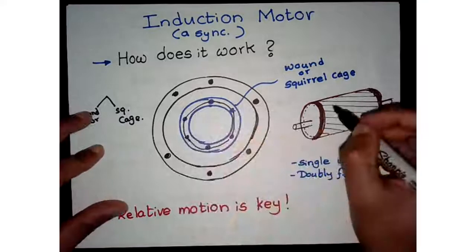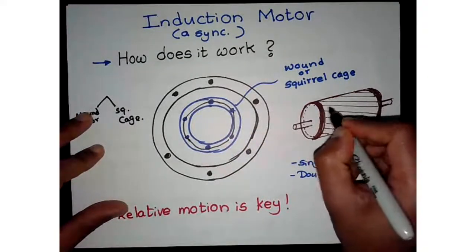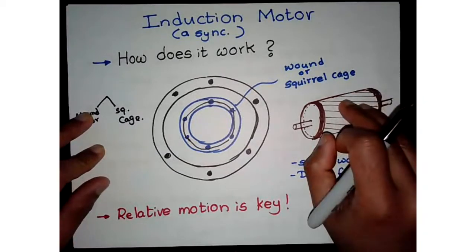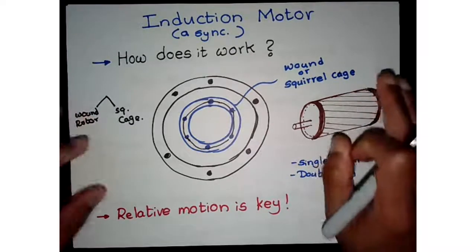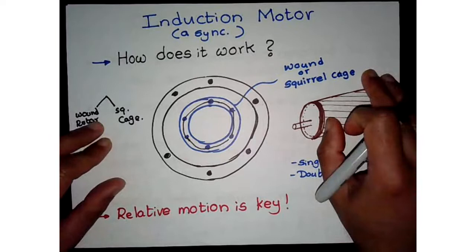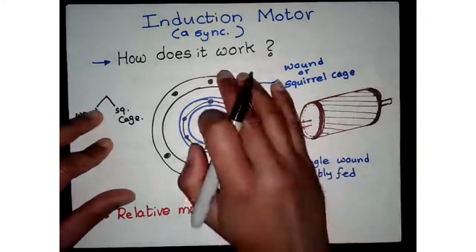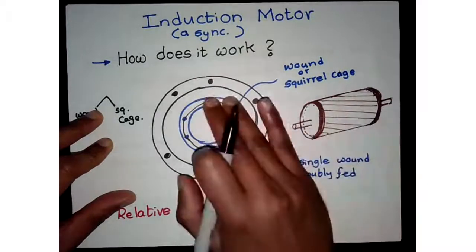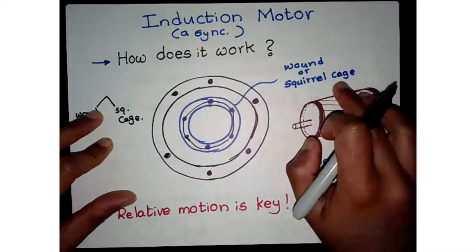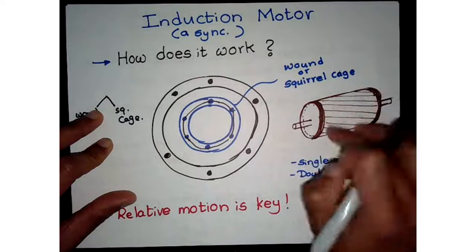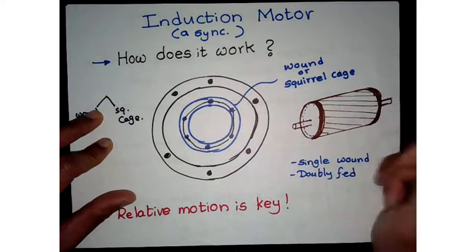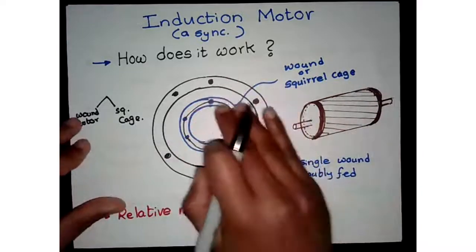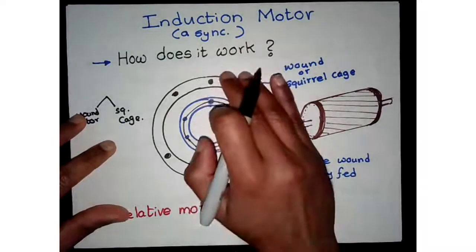That's where the squirrel cage concept comes in. Instead of having wire conductors, they create aluminum bars, and then you have electromagnetic material to support the flux that builds up. The structure looks like a squirrel cage — like the one you'd put a little squirrel in — and that's why we call it a squirrel cage. Now let's assume the rotor is not rotating; it's stationary.